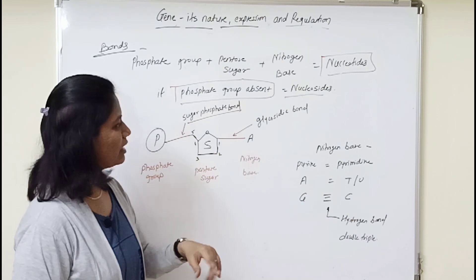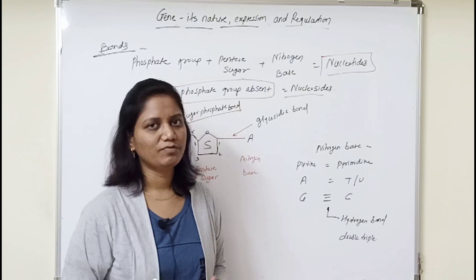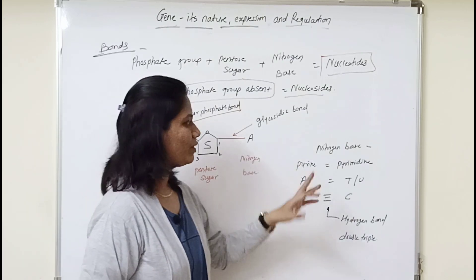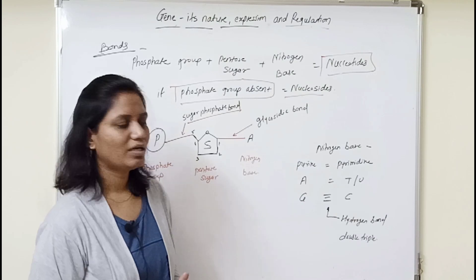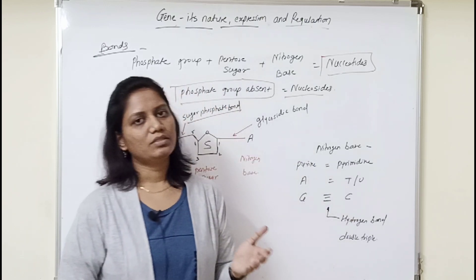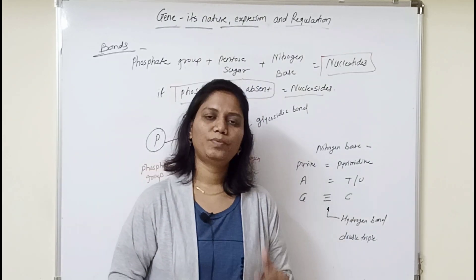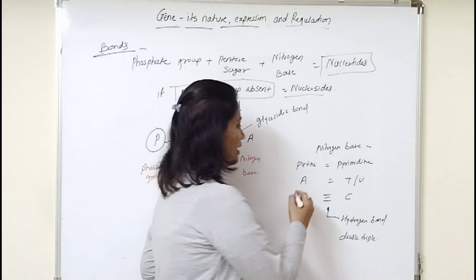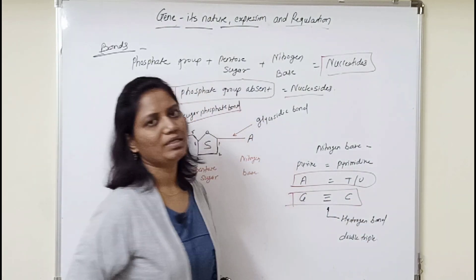DNA is a double strand and RNA is a single strand. RNA can have an in-folded structure. In DNA, the two strands form pairs. Purine and pyrimidine are the two types of nitrogen bases. Adenine is a purine and it pairs with thymine in DNA or uracil in RNA. Between adenine and thymine there are double hydrogen bonds. Between guanine and cytosine there are triple hydrogen bonds. This is an important point.